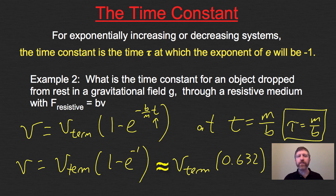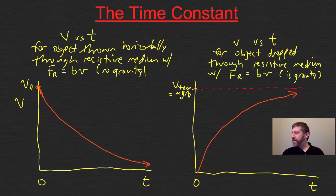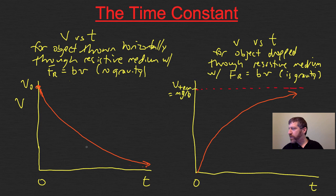Our time constant for both systems is just m/b, which has units of seconds. For the decaying function when you push something through a resistive medium with no gravity, at time m/b, the speed will be 36.8% of the initial speed.